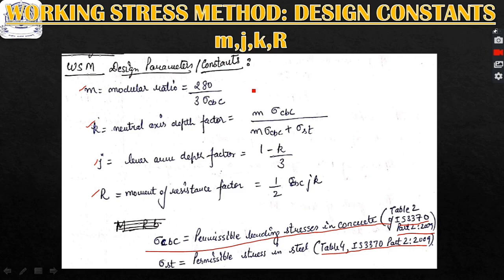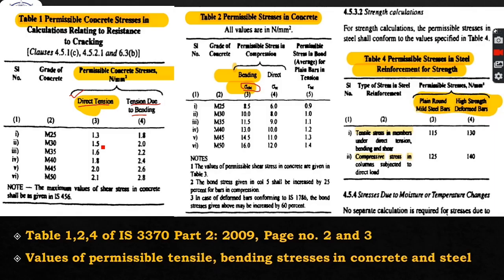Table 2 gives permissible stresses in concrete: bending stresses, direct stresses, and bond stresses. We require sigma_cbc here for calculation of M, K, and R. For example, for M35 concrete, the bending stress should not exceed 11.5 N/mm².